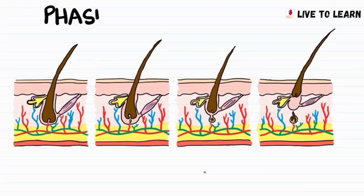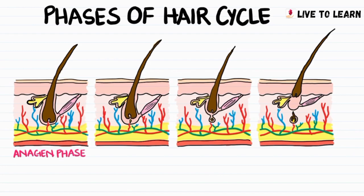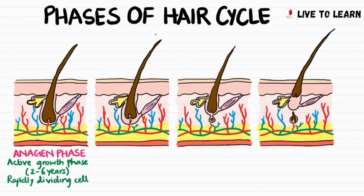Moving on to the phases of the hair cycle. The first phase is the anagen phase, which is a phase of active growth and it lasts for about 2–6 years. During this phase, the cells in the hair root are rapidly dividing so more new hair is formed.